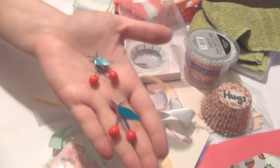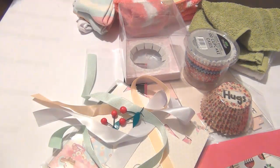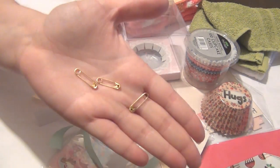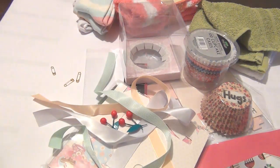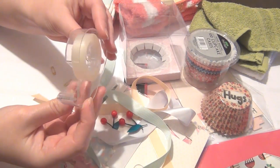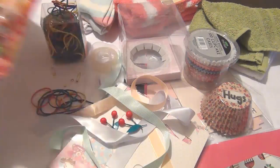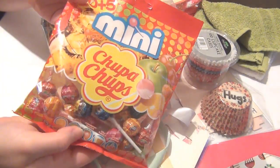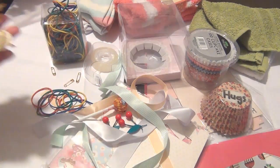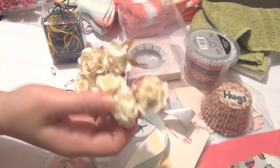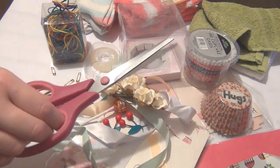I'll also be using some ribbon and some sort of decoration for the cake. I have these little cherries here and I will show you how to make these in this video. I'll also be using some of these safety pins, some double-sided tape, some elastic bands, and here's another option for decoration. You can use a lollipop, some flowers, and you'll also need some scissors.